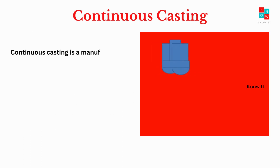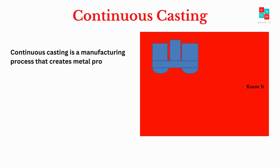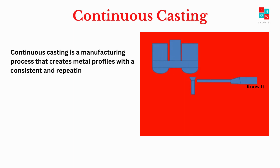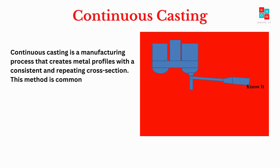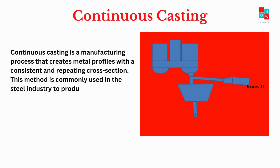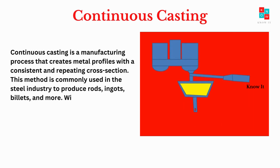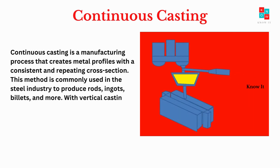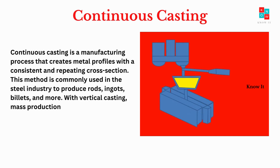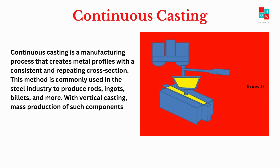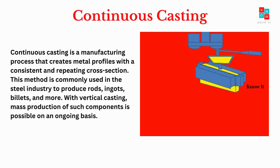Continuous casting is a manufacturing process that creates metal profiles with a consistent and repeating cross-section. This method is commonly used in the steel industry to produce rods, ingots, billets, and more. With vertical casting, mass production of such components is possible on an ongoing basis.